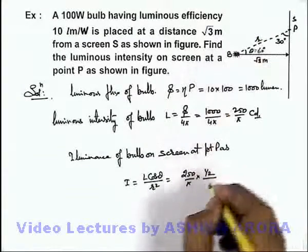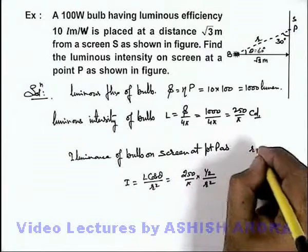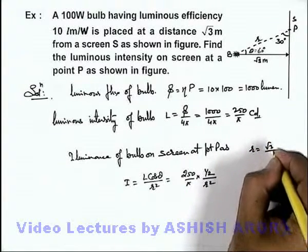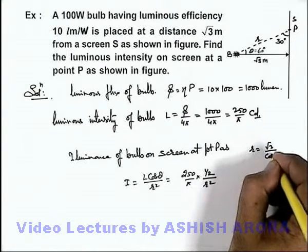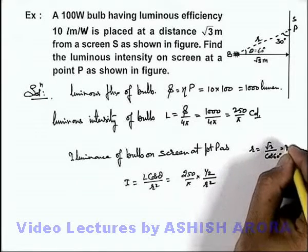If this is the distance r, the value of r we can calculate as √3 by cos 60 degrees, that will be 2√3 meters.